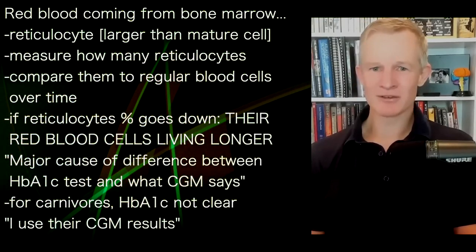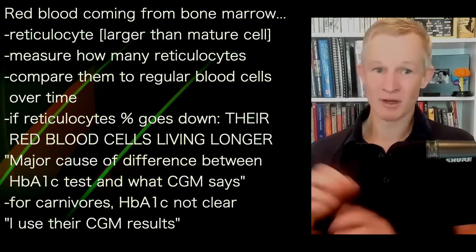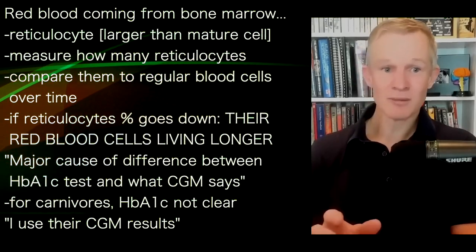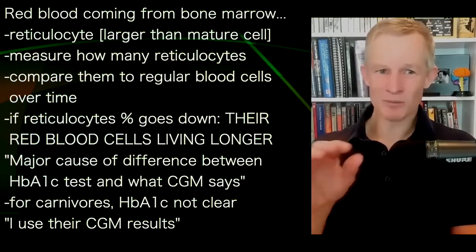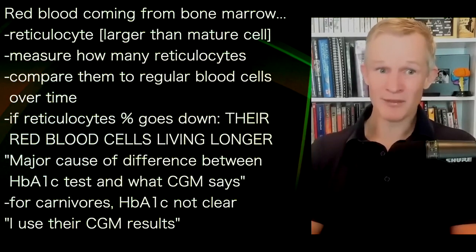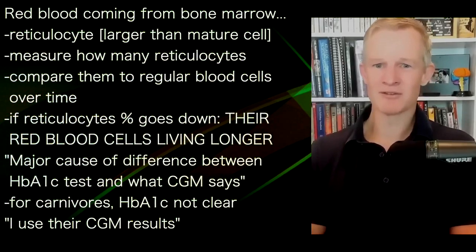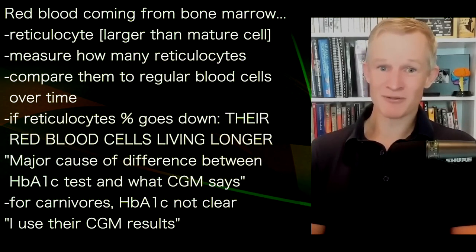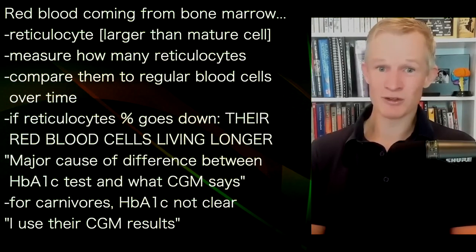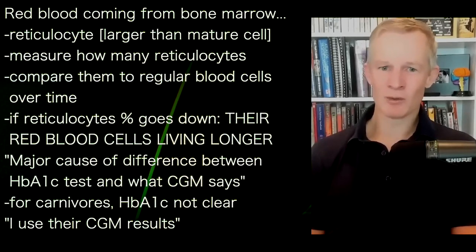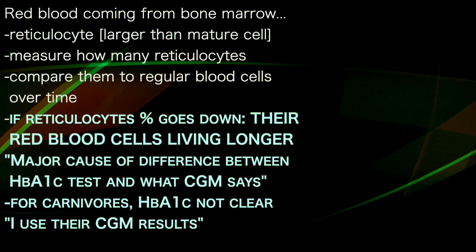This longer red blood cell lifespan is the strongest cause of an incongruous response between what we see on the CGM and the HbA1c. I'm beginning to find that the HbA1c for carnivores is often near a waste of time, and I always prefer to go to the source of the data, which is the CGM.